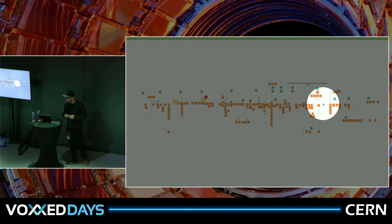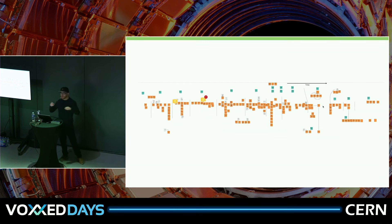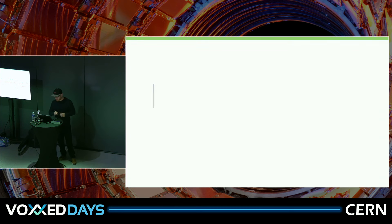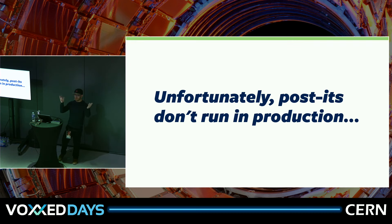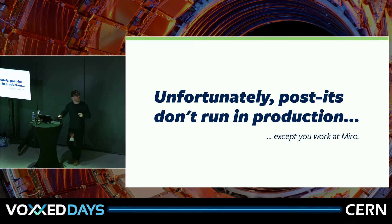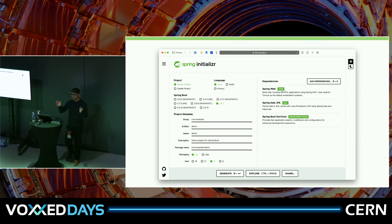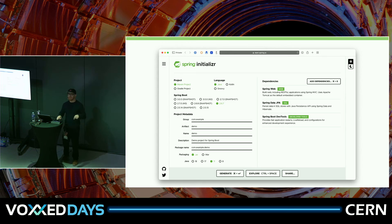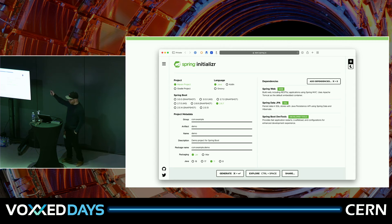This came from an event storming design session — we found we need to build these two logical units and make them interact. This is actually a screenshot from a Miro board of a customer engagement. Where do you think the coding happens in this process? You see that tiny gap? That's when implementation happens. All this design work — but it just doesn't work in production, except if you work at Miro, where there are post-its in production.